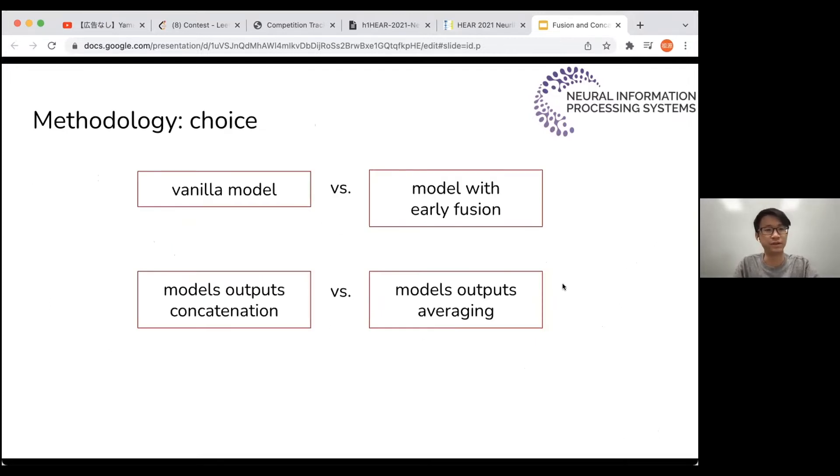So we are facing the choice: which one to choose and why? Whether a model with early fusion, concatenation versus averaging. We finally chose model with early fusion and models outputs concatenation. This decision is based on the experimental results, which will be talked about later.